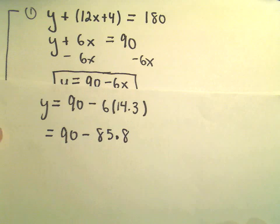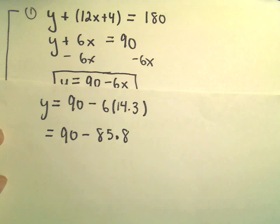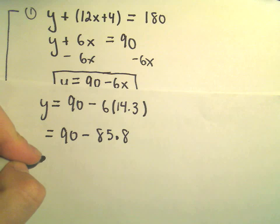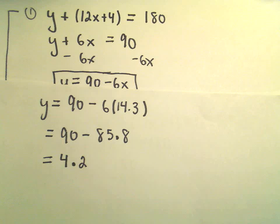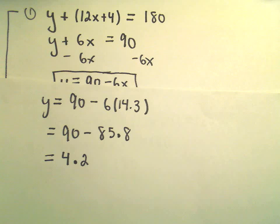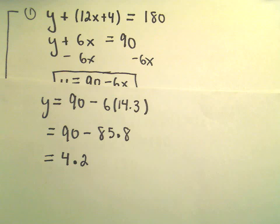And now if we simply subtract, so if we do 90 minus 85.8, that's going to give us 4.2, so we can say that our original angle y must have had measure roughly equal to 4.2 degrees.